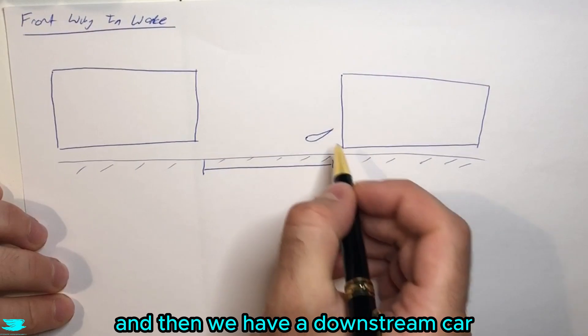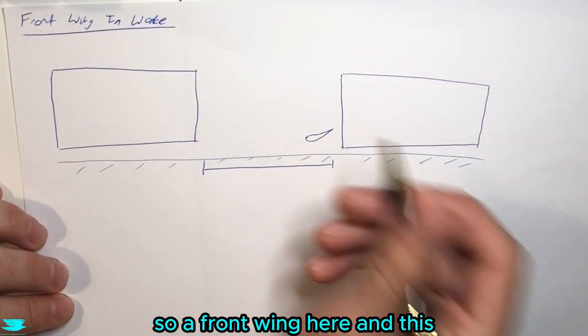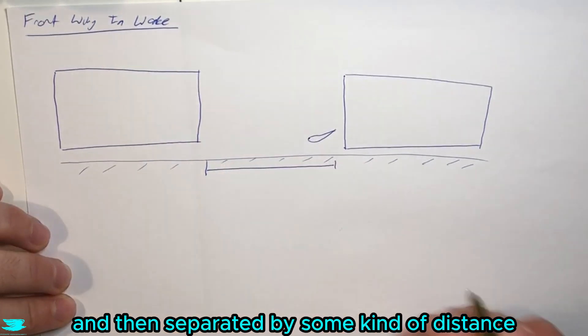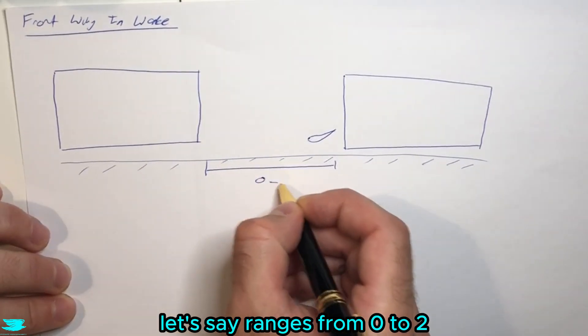Then we have a downstream car which has a front wing setup, a single element, and they're separated by some kind of distance. Let's say it ranges from zero to two car lengths downstream where L is this length here.